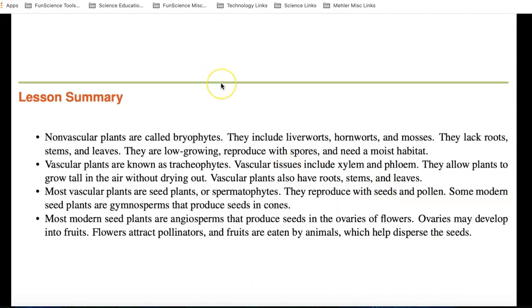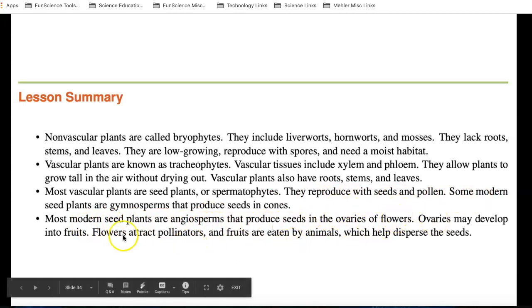Real quick, nonvascular plants are called bryophytes. Make sure you know what is typical of them. And vascular plants, tracheophytes, and they have xylem and phloem, and why they were so important. Most vascular plants are seed plants, and they produce seeds and pollen. And most modern seed plants are angiosperms that produce seeds in the ovary of flowers. And remember, flowering plants, the most successful.